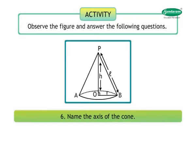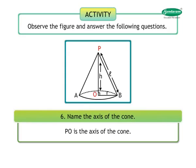Question 6: Name the axis of the cone. Answer: PO is the axis of the cone.